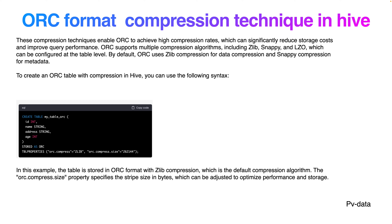For ORC compression technique, you can see the table structure with table properties: ORC.compress equal to ZLIB, and ORC.compress.size in bytes. These compression techniques enable ORC to achieve higher compression rates, which can significantly reduce storage costs and improve query performance. ORC supports multiple compression algorithms including ZLIB, Snappy, and LZO, which can be configured at the table level. By default, ORC uses ZLIB compression for data compression and Snappy compression for metadata.